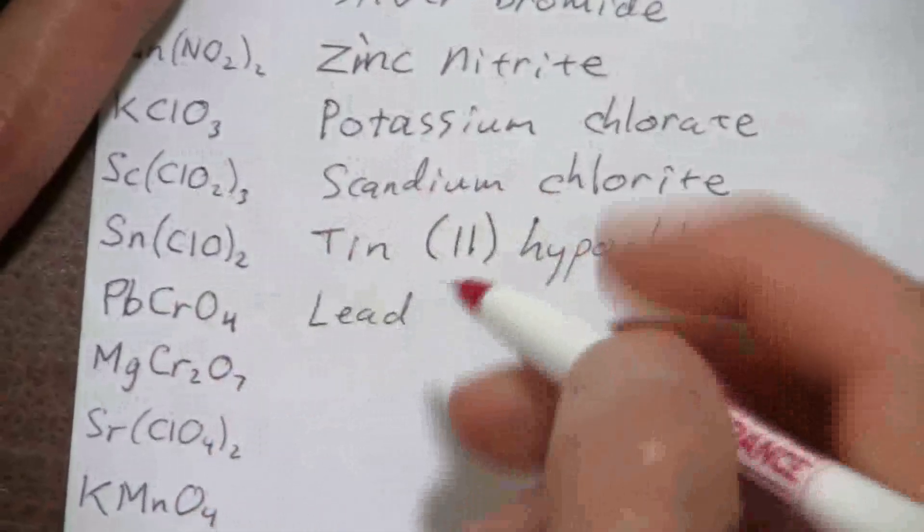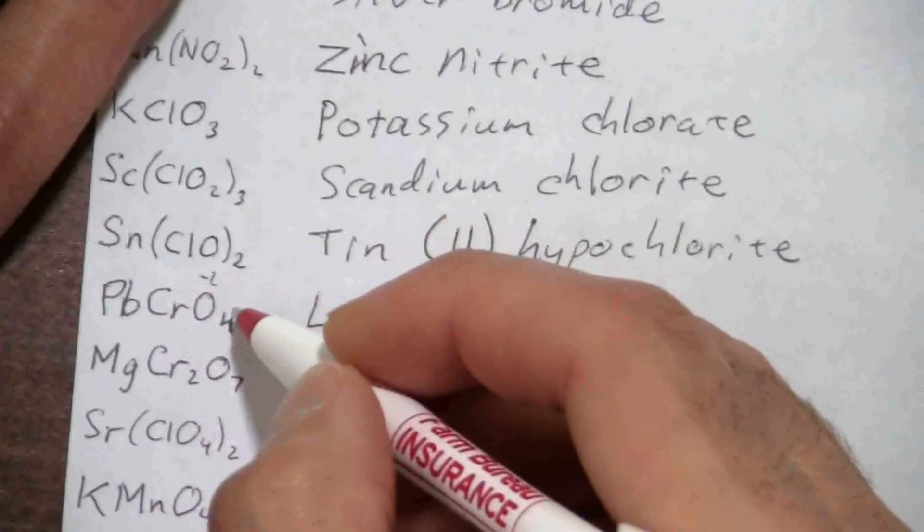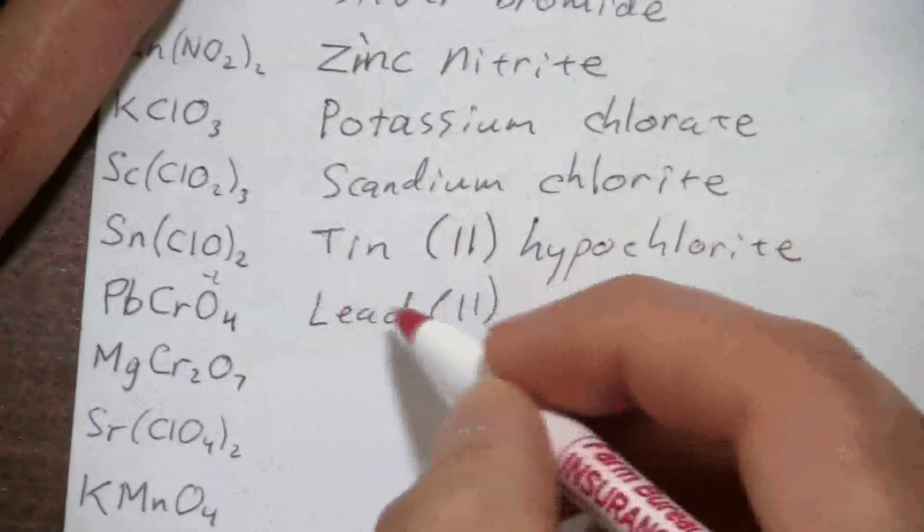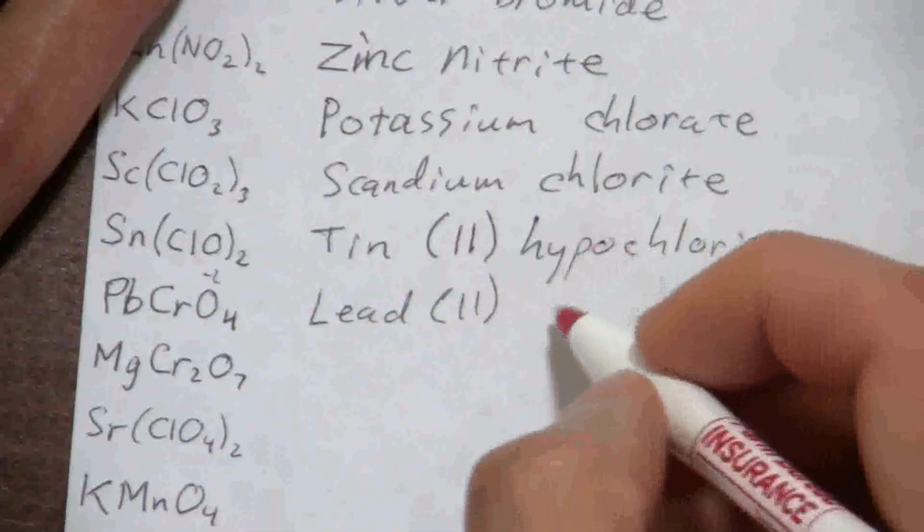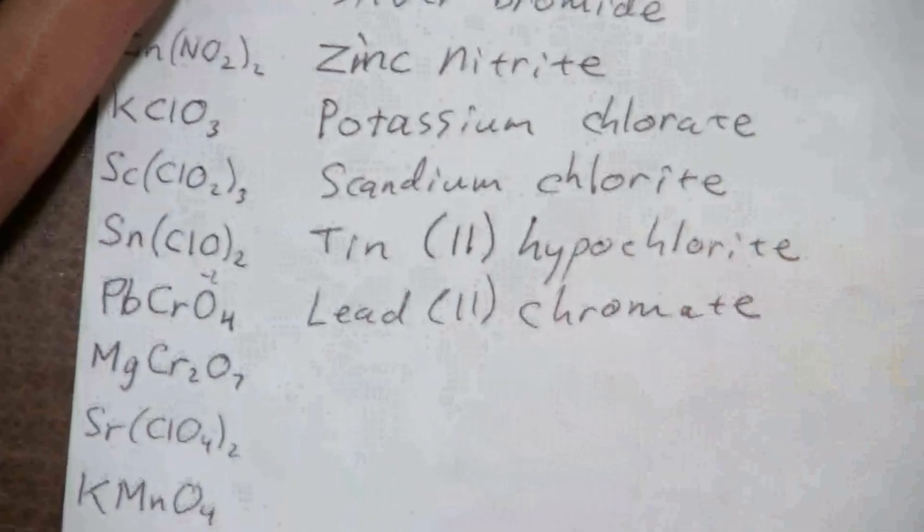And we would have to know from the chromate, CrO4, that this is a minus two, the CrO4, and so the lead must be a positive two. So this would be lead two, CrO4 is the chromate ion.